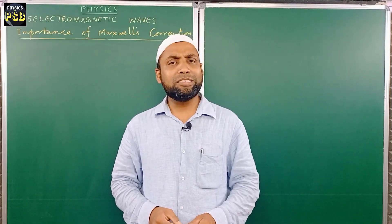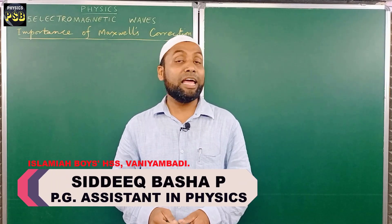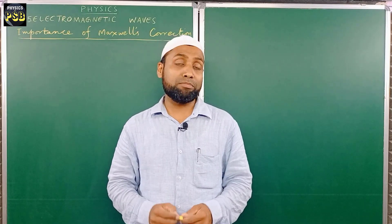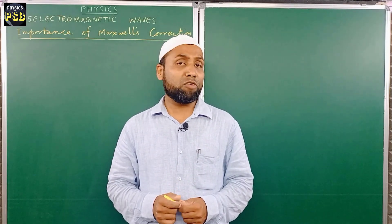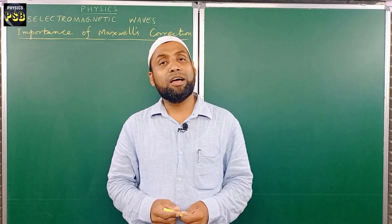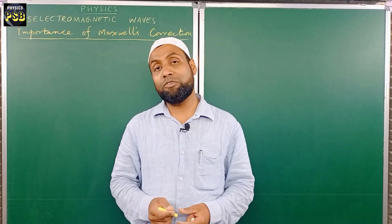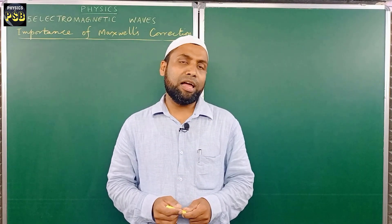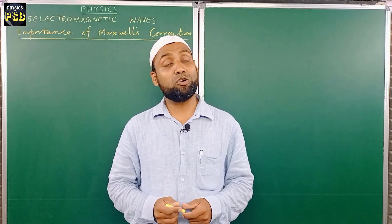Assalamu alaikum. We know the Sun is the closest star to our planet and it is the source of almost all kinds of electromagnetic radiation. This electromagnetic radiation reaches Earth from the Sun and other stars through empty space. This empty space is free from any kind of electric charges. When there are no electric charges, there will be no electric current, and according to Ampere's law, when there is no electric current, there will be no existence of a magnetic field.